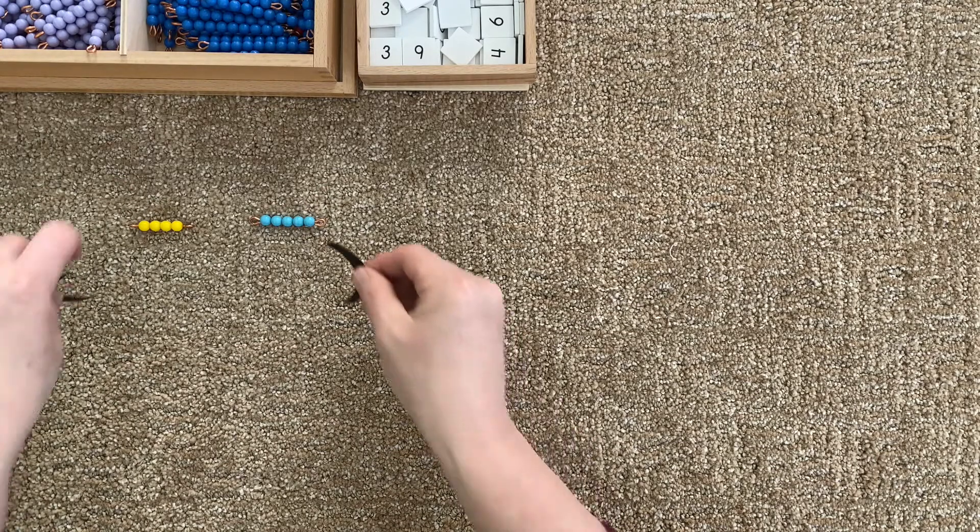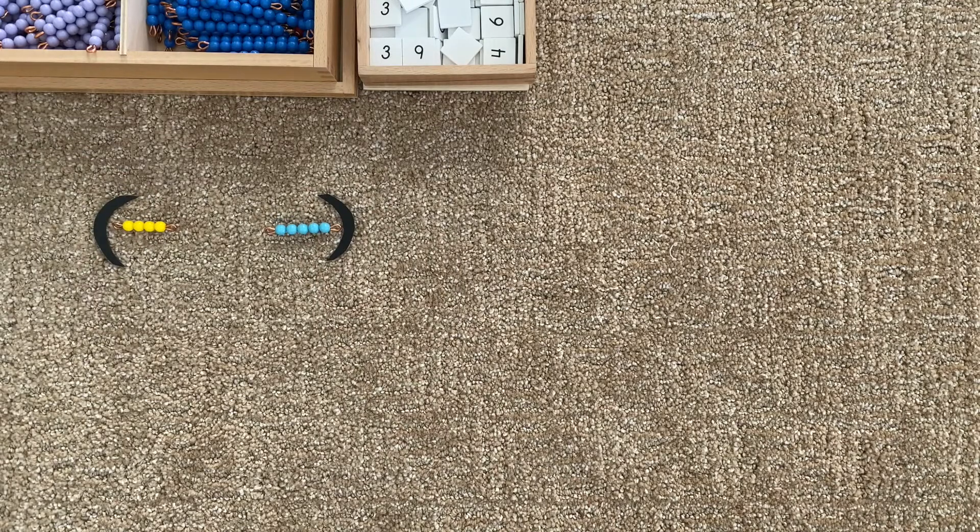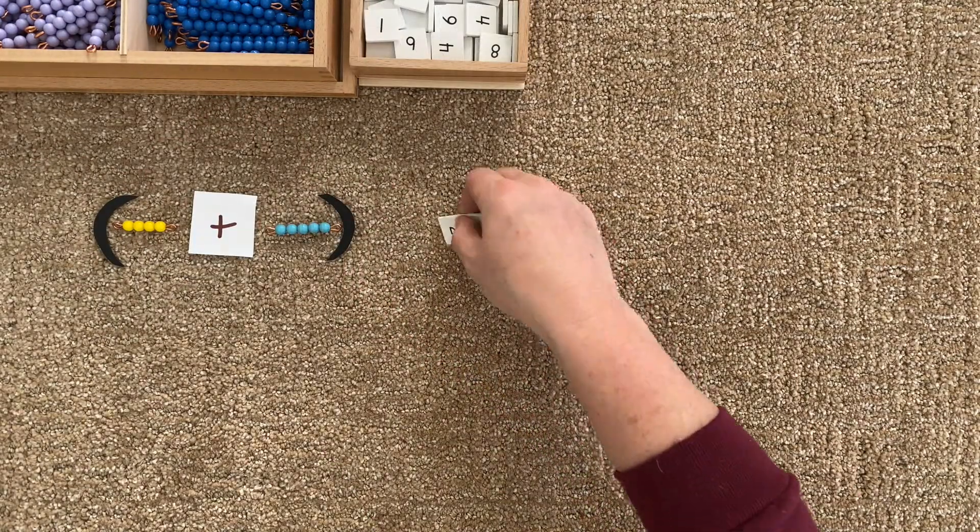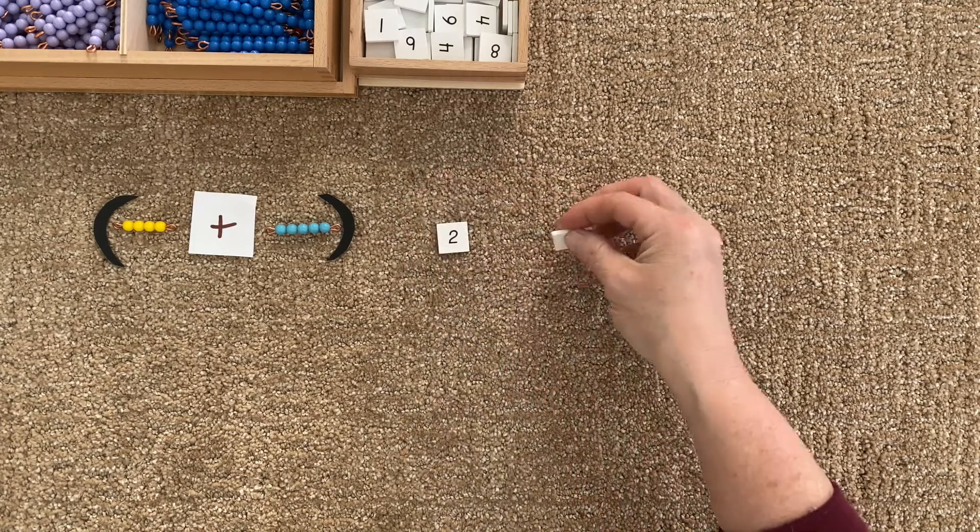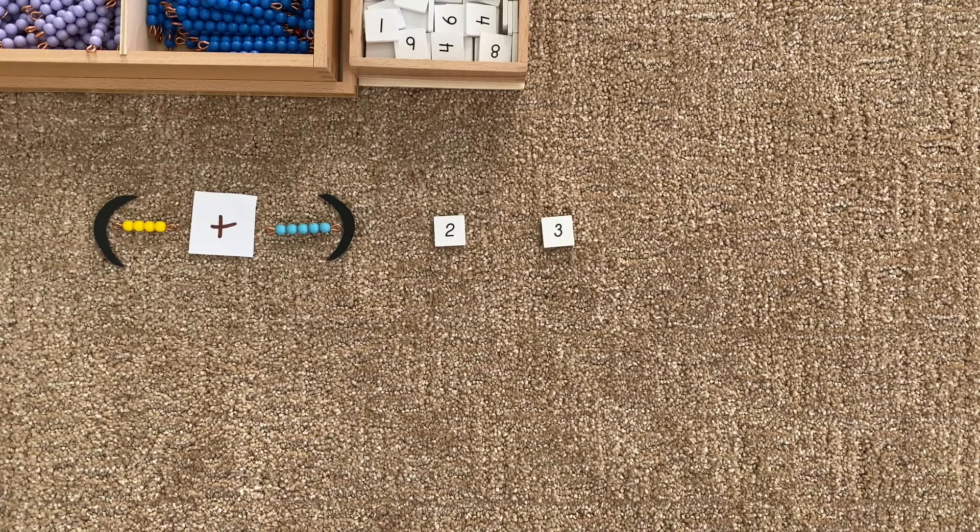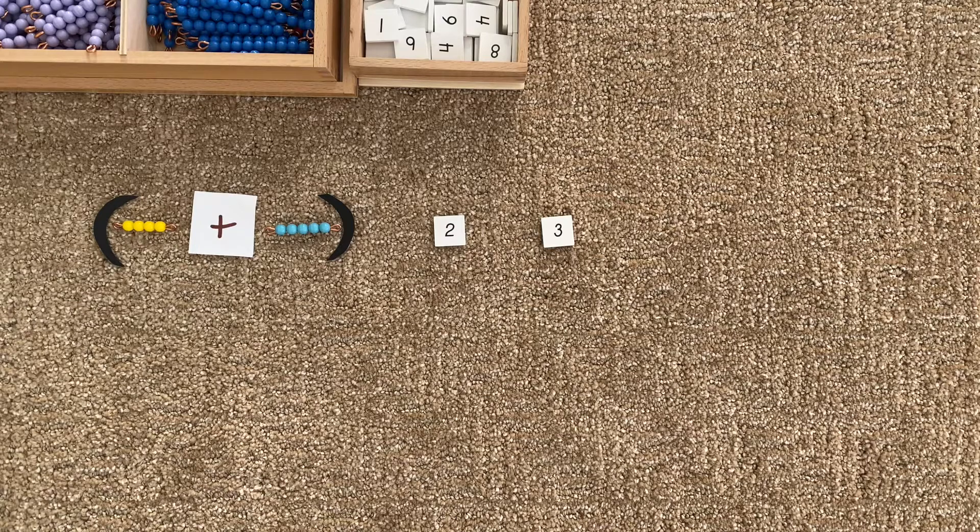So what do I need? I need my parentheses and my plus sign, but I'm also going to collect two numbers for our multiplier: two tiles, two and three.